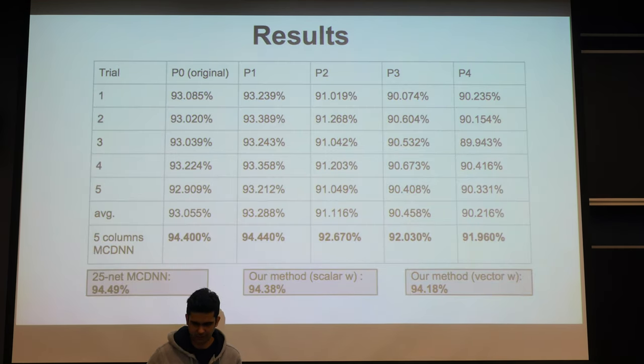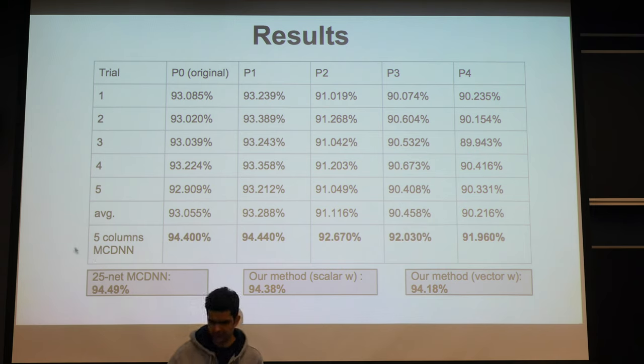And these are the results of our experiments. We trained five DNNs for each of the pre-processing types. We had four pre-processing types, and one is the original dataset. And as expected, we can see that the five-column MCDNN essentially outperforms each of the single CNN.